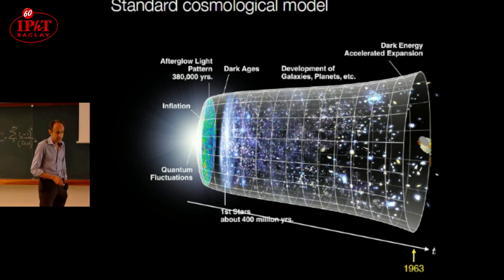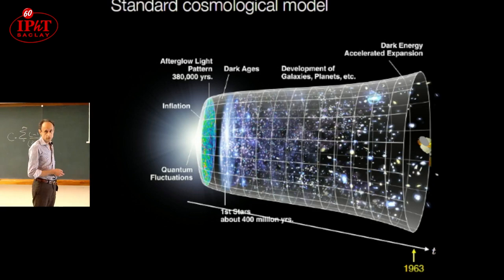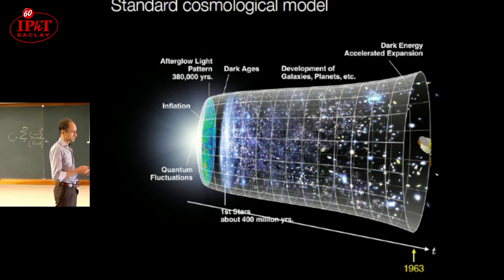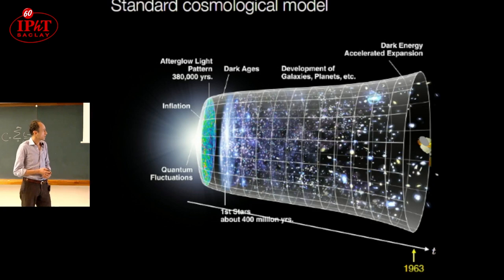During these years, what is called the standard cosmological model was established during the time. The idea that the universe is described by general relativity on large scales, that the universe is expanding, satisfies Einstein's equations, that structures formed by gravitational attraction and collapse thanks to the fact that there is some form of cold dark matter. Later on in 1998, we discovered that the expansion of the universe is accelerating.